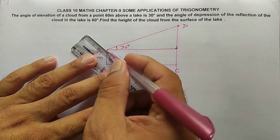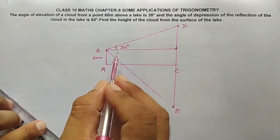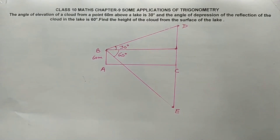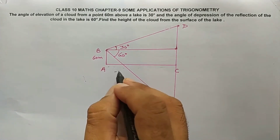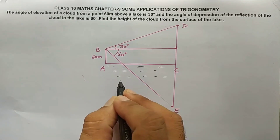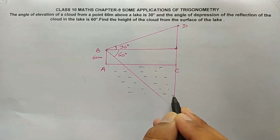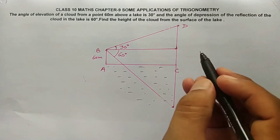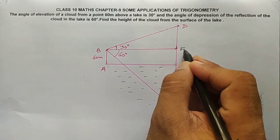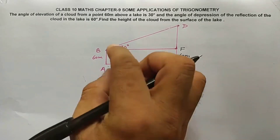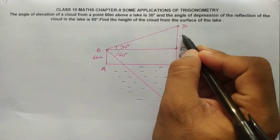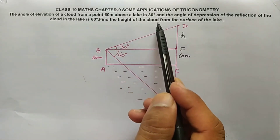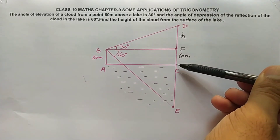The horizontal is already drawn. This angle is 60 degrees. Now, AB is 60 meters, so CF will also be 60 meters. Suppose DF equals h. We need to find the height of the cloud from the surface of the lake, which is CD. So we need to find CD.